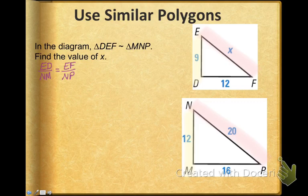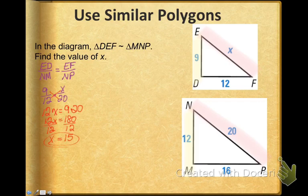Now I have a proportion. I can just replace those with numbers. I can say ED is 9, NM is 12, EF is X, and NP is 20. Now I have a proportion. I know how to solve using cross products. I multiply 12 times X and 9 times 20, and I solve the proportion, and I get that X equals 15. So I know the side length of EF is 15, and this is how you use similarity to find unknown sides.